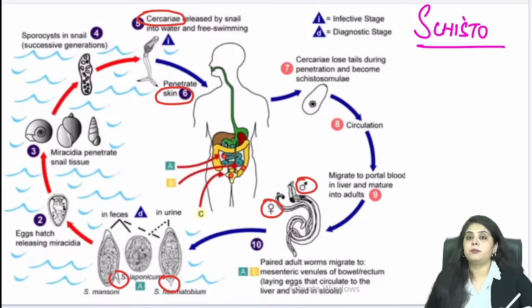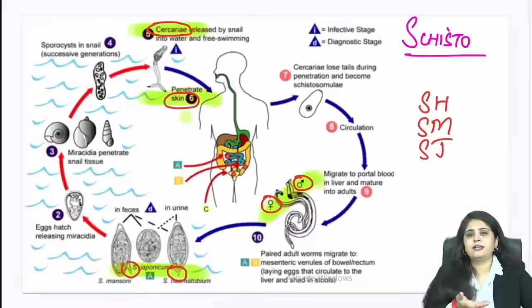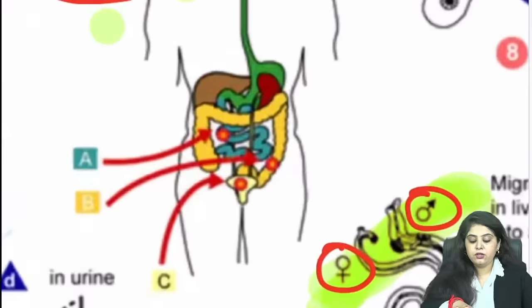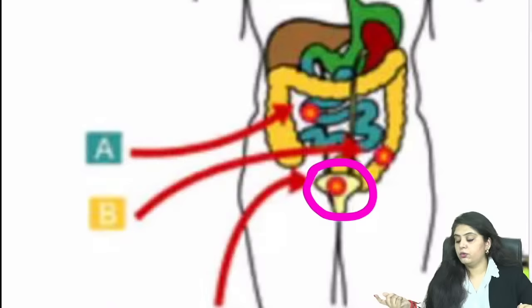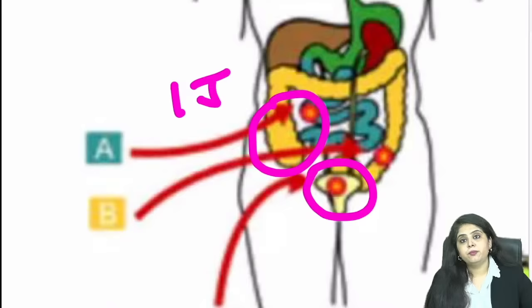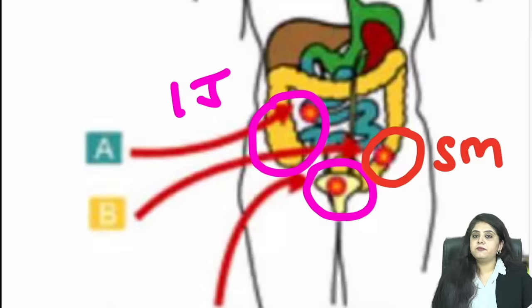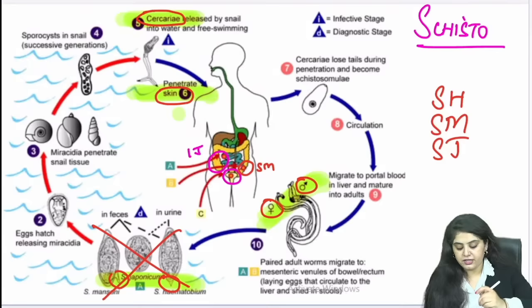To summarise schistosoma identification: urinary bladder veins → haematobium; ileocecal/small intestine veins → japonicum; sigmoidorectal/large intestine veins → mansoni. If you know your tables and have revised them well, this is not a matter of worry at all. If the examiner tries to confuse you by changing location, you just apply the logic. I hope that is settled for everyone.